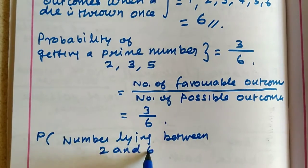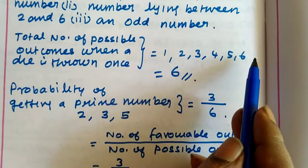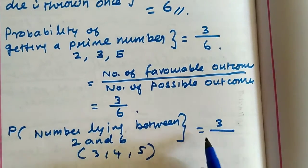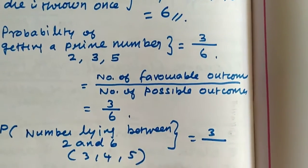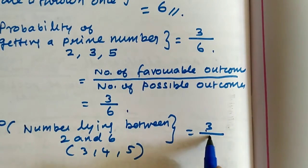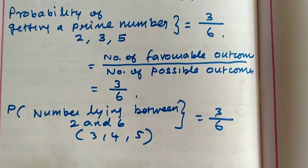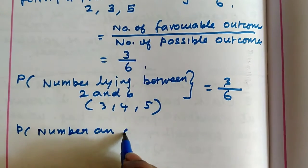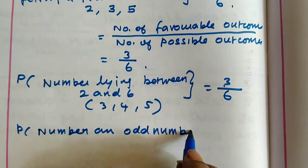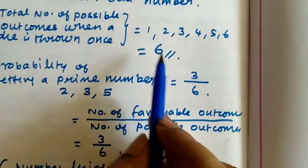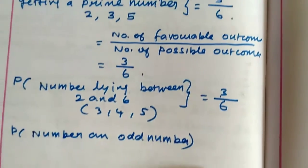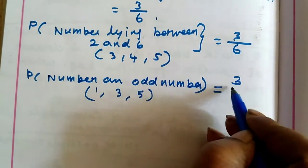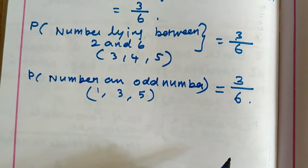Number lying between 2 and 6: between 2 and 6 we have 3, 4, 5 — that is 3 numbers. Odd numbers are 1, 3, 5 — that is 3 odd numbers. So the probability is 3 by 6, and total number of possible outcomes is 6.